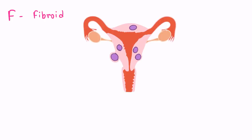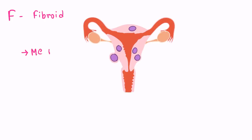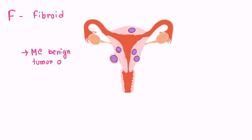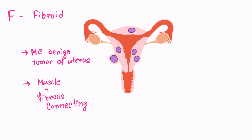F is for fibroid. Fibroid is the most common benign tumor of the uterus. Histologically, it is a tumor composed of smooth muscle and fibrous connective tissue.